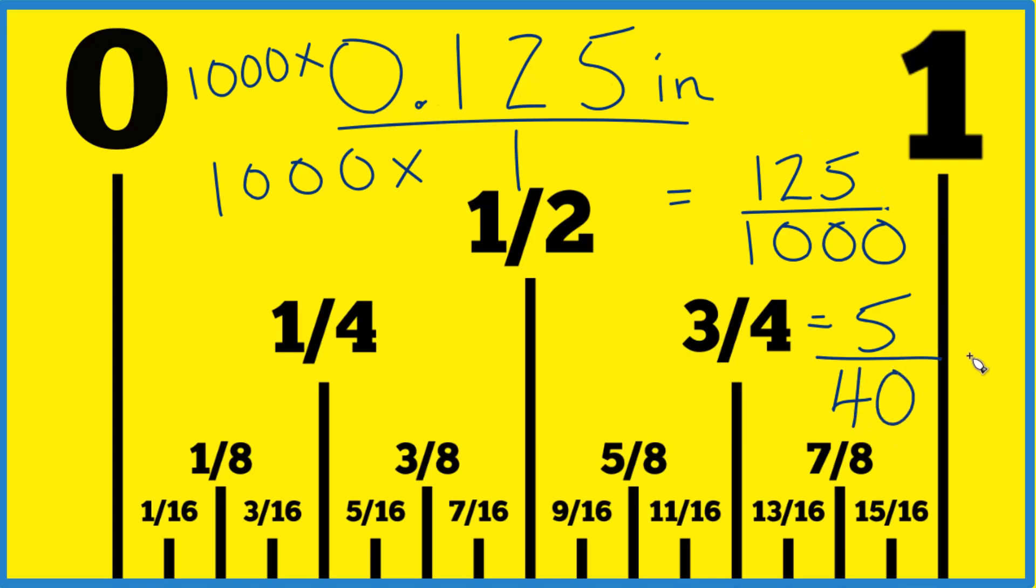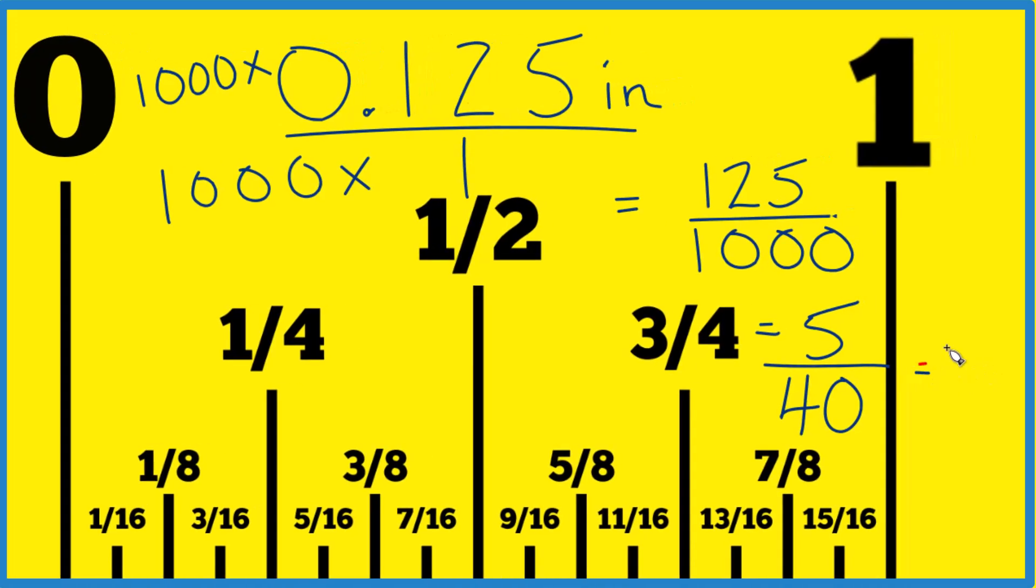So we've reduced it some, but we could still reduce it further because five goes into itself one time and five goes into 40. Eight times five is 40.